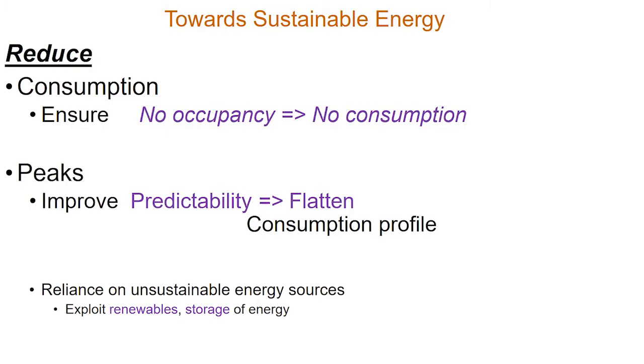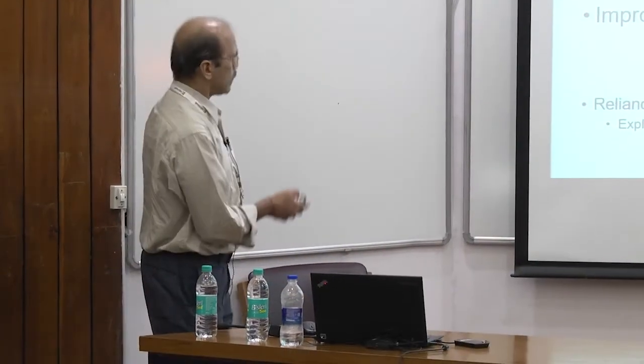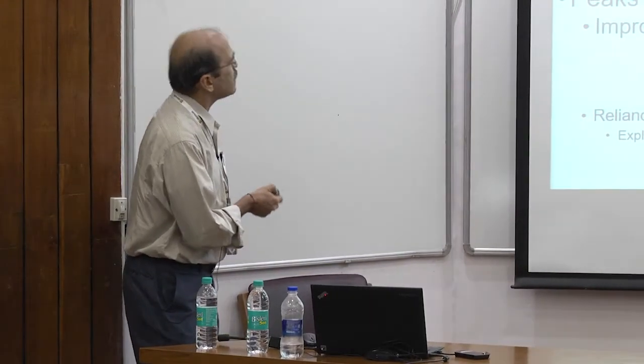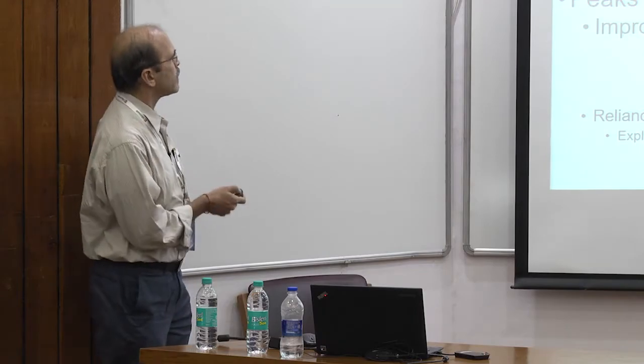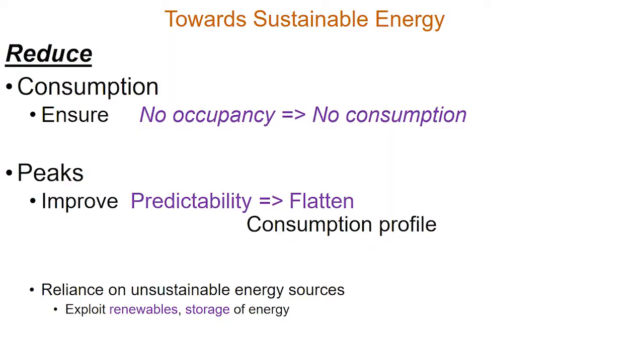I won't get into that here. I want to focus on the one R which is the most important, I think, which is reduce, and I'm going to talk about three kinds of reduction. One is the consumption reduction, to reduce the amount of energy that we use. The mantra that we've been following for that is there's no occupancy in a certain space, we want to have no consumption there. So no unnecessary lights, fans, ACs, and so on.